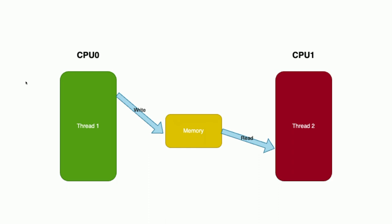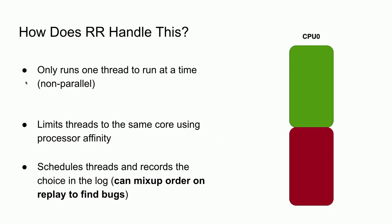How does RR handle this? They just pin everything to one core using thread affinity, run everything non-parallel, intercept, and do cooperative scheduling on their own, recording the scheduling choices. If you wonder whether that changes the bug, the way they get around it is by mixing up the order on replay — there's a chaos mode you can use. Another benefit of binding everything to the same CPU is that CPU-dependent instructions like CPUID will give the same output because we're bound to the same core during both record and replay.